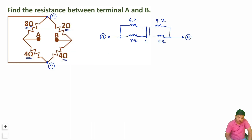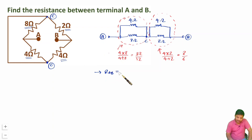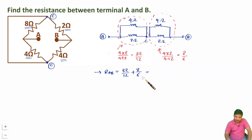The 8-ohm and 4-ohm between A and C are in parallel, giving (4 × 8) / (4 + 8) = 32/12 ohm. The 2-ohm and 4-ohm between C and B are in series giving 6-ohm, represented as 8/6. The equivalent resistance RAB = 32/12 + 8/6. Taking LCM of 12: (32 + 16) / 12 = 48/12 = 4 ohm.